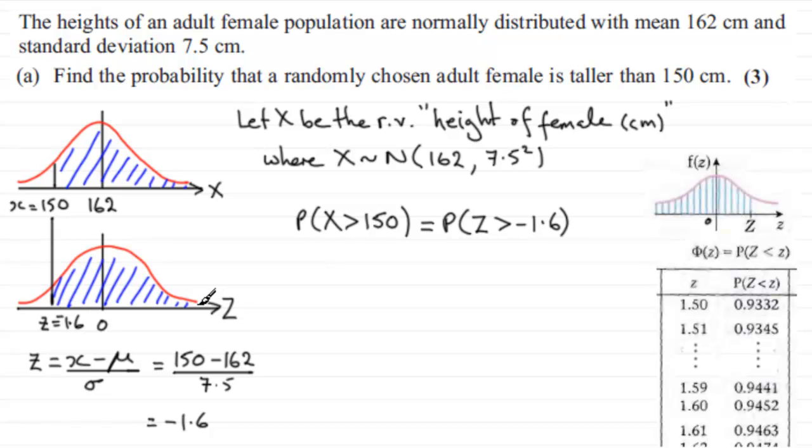But we can use the symmetry of the graph. We can say that the area to the right of minus 1.6, if I was to mirror this across to the other side and call this value 1.6, it's going to be the same as the probability of being less than 1.6. So we can change this round saying zed is less than 1.6.